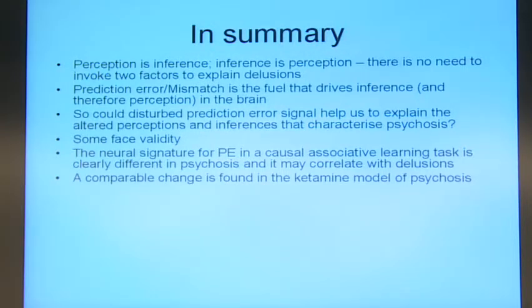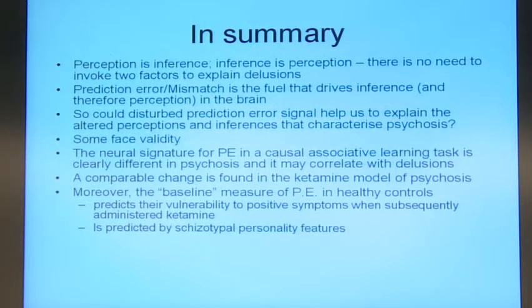Furthermore, you can find a comparable, a highly comparable pattern of change in people who have an artificially induced psychosis-like state. I don't think ketamine is an imitation of schizophrenia. I think it's a good model for the early stages of psychosis. Moreover, and this is where I think we might be in exciting territory again, is that the baseline measure of prediction error in healthy controls predicts their vulnerability to positive symptoms when they get given this ketamine challenge. And it's also, perhaps, predicted by schizotypal personality features.